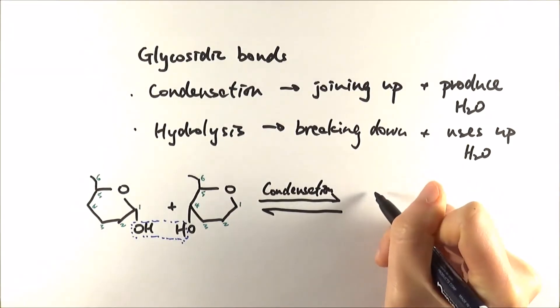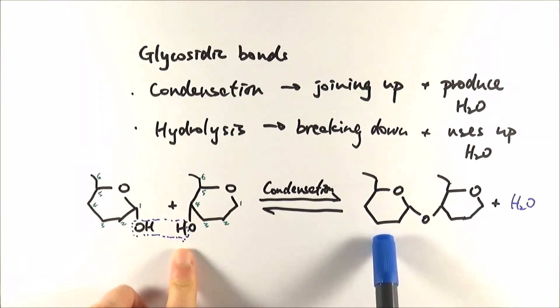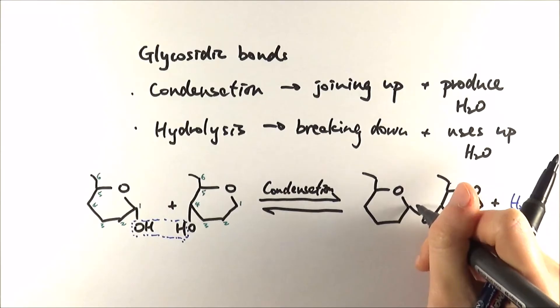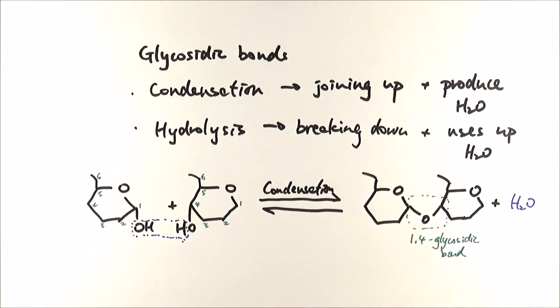And so what you'll get in the end is a product that looks like this. So the hydroxyl group from this side steals the hydrogen from this hydroxyl group and it goes off to form water, and then the remaining oxygen in this case will then join up the two alpha glucose molecules together, and this is what we call the 1,4 glycosidic bond here. And again it's because it's formed between C1 and C4 of the two molecules, hence why it's called 1,4 glycosidic bonds.